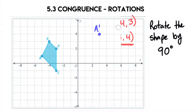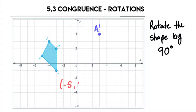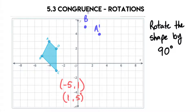Let's move on to B. B is at negative 5, positive 1. Again, we're going 90 degrees, so the 1 and the 5 will flip — we now have 1, 5. B is in quadrant 2 and will end up in quadrant 1, so both of these will be positive: 1 and positive 5. And here's B prime. I know this looks really weird, but as long as we're following this process, the shape is going to come out perfectly.